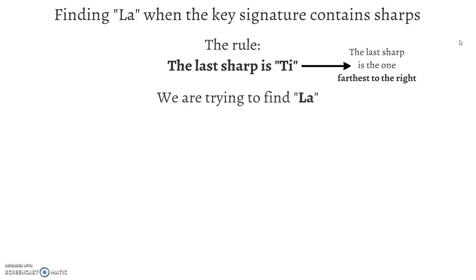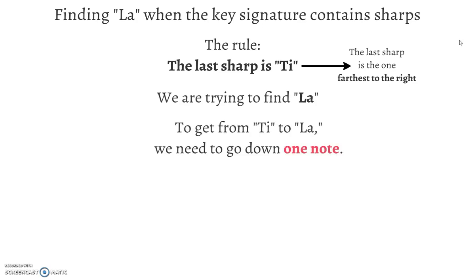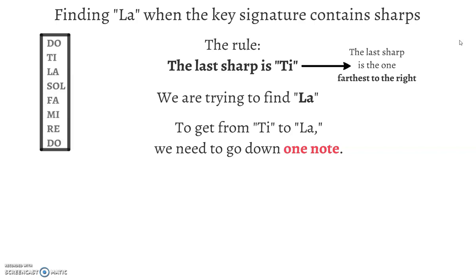We're trying to find La. And to get from Ti — our last sharp — to La, we need to go down one. There's Ti, and below that is La.